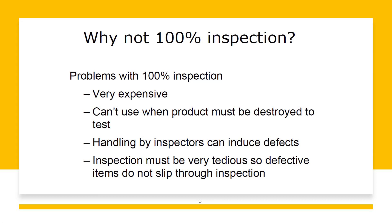Why not 100% inspection? The problems with 100% inspection are: it is very expensive — you need to hire more labor to check each and every product out of millions; some products must be destroyed to test, meaning those units go to waste and increase cost because all the raw material used in that product becomes a loss; and handling by inspectors can introduce defects, making inspection tedious.